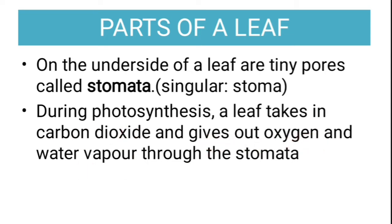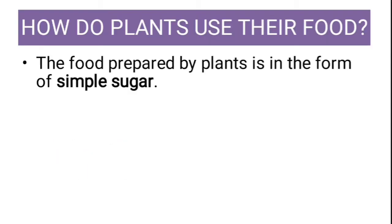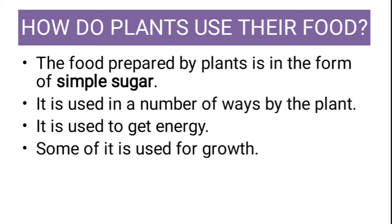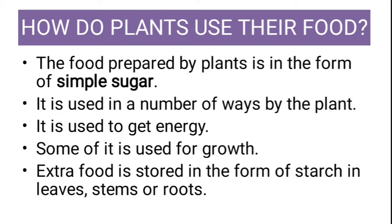How do plants use their food? The food prepared by plants is in the form of simple sugar. This sugar is used in a number of ways: it is used to get energy, and some of it is used for growth. The extra food that is left over is stored in the form of starch in different parts of the plant, like leaves, stems, or roots, and this is then used by us.